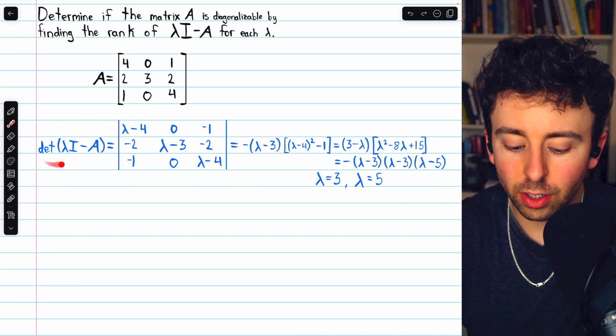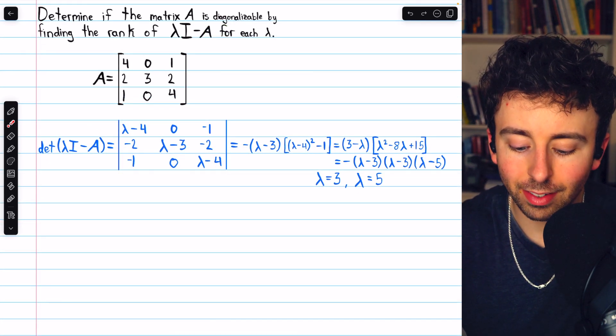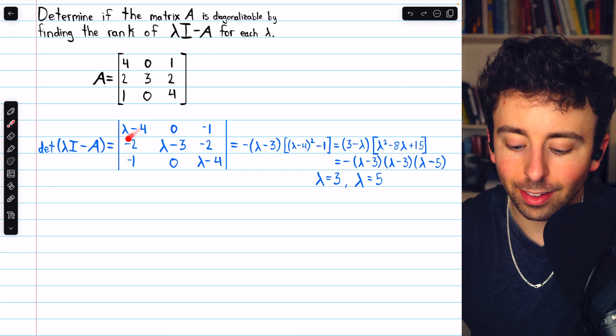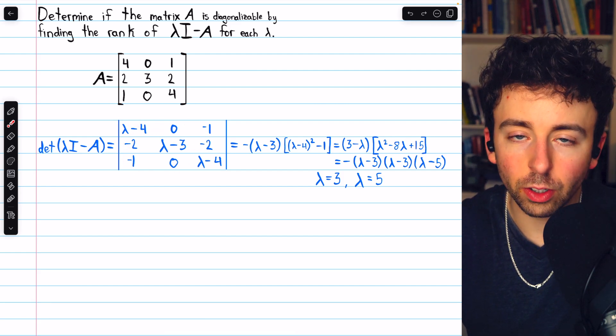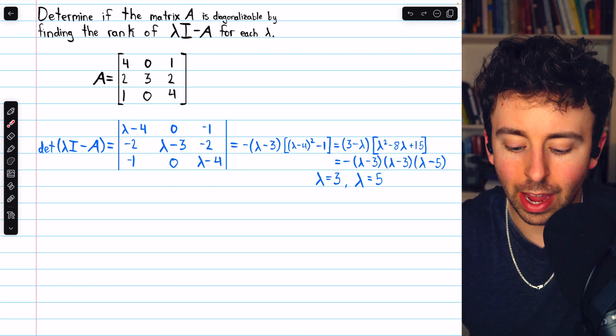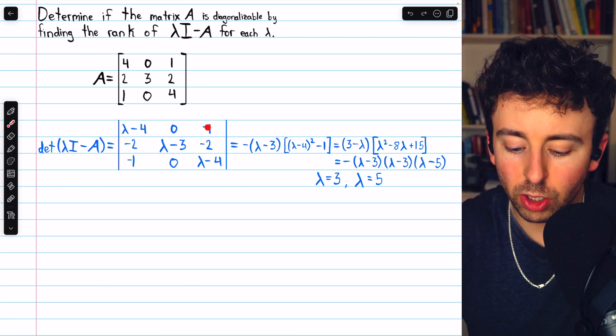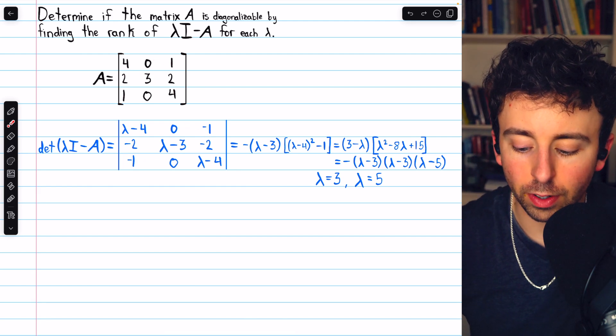To find the eigenvalues, we find the determinant of lambda I minus A. Lambda I minus A looks like this. On the diagonal, we just have lambda minus the diagonal entries of A, and off the diagonal, we just have the negatives of the entries of A.